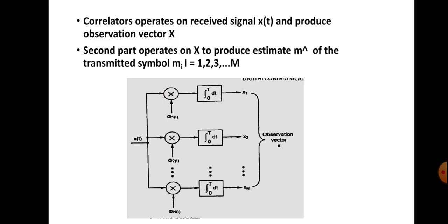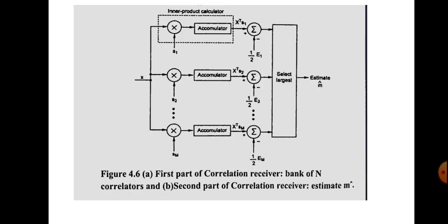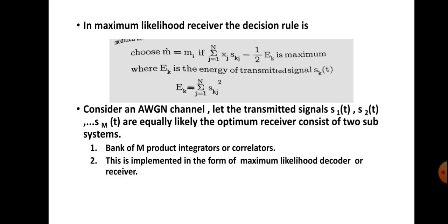This is the maximum likelihood rule applied in the second section. The resulting product from the accumulator is given to a summer. In the next stage there is a process to find the maximum value, and this is the decision rule.